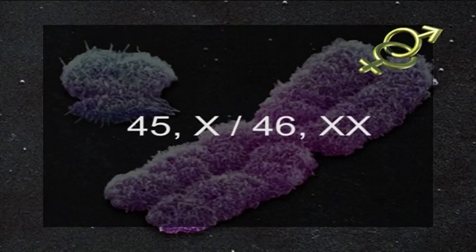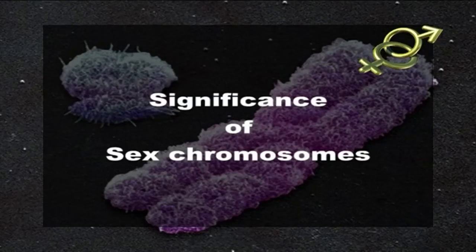Some women with Turner syndrome have a chromosomal change in only some of their cells. These cases are called Turner syndrome mosaics — for example, 45 X or 46 XX.